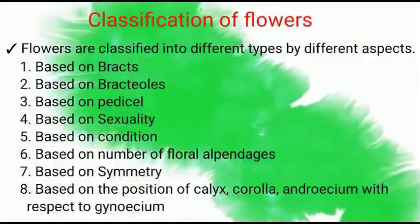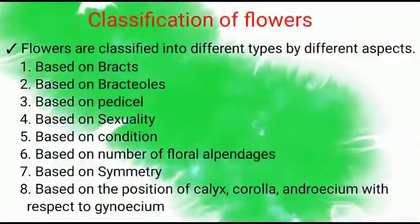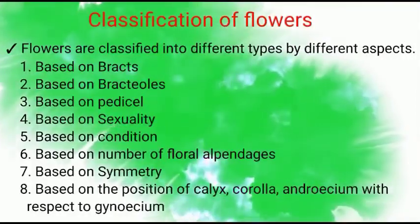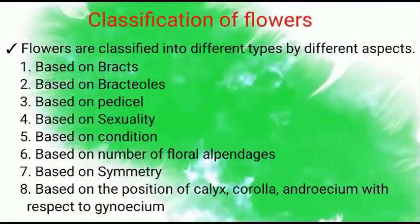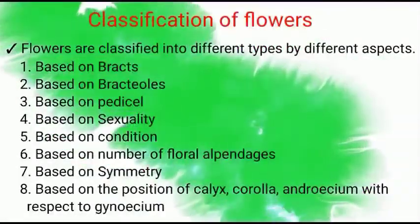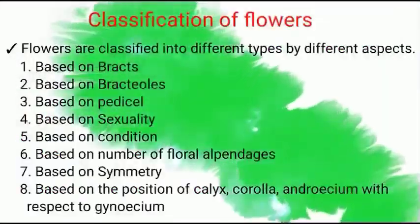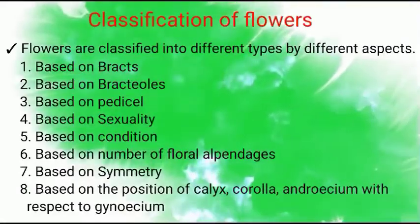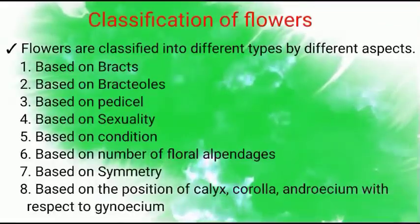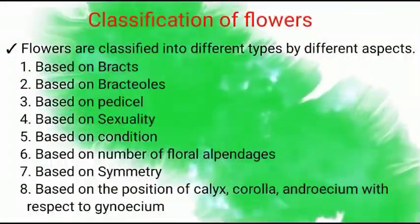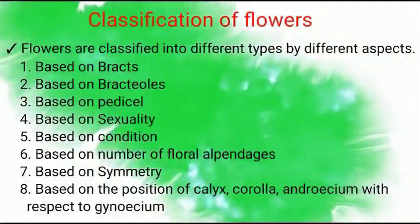Classification of Flowers: Flowers are classified into different types based on different aspects. The first is based on Bract; second, based on Bracteoles; third, based on Pedicel; fourth, based on Sexuality; fifth, based on Condition; sixth, based on Number of Floral Appendages; seventh, based on Symmetry; and eighth, based on the position of Calyx, Corolla, and Androecium with respect to the Gynoecium.